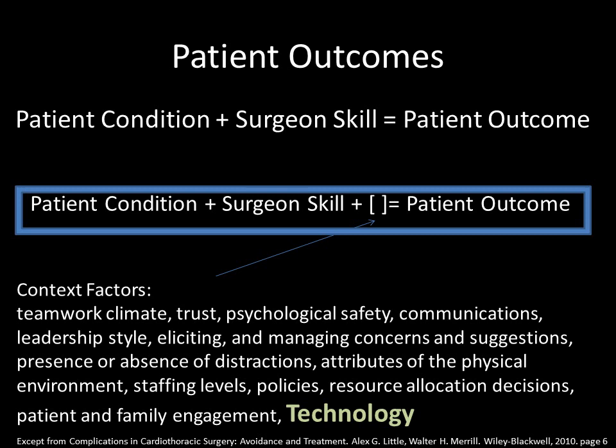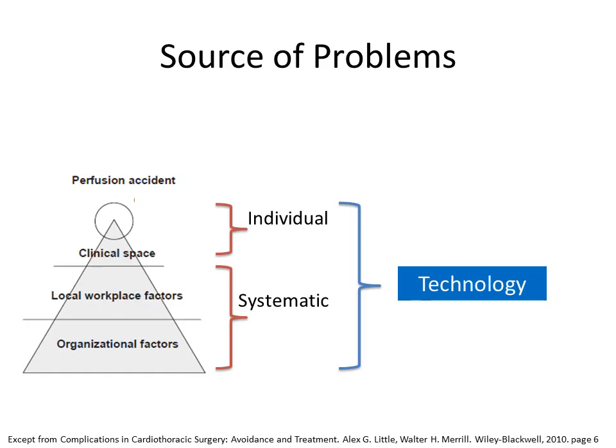Most importantly, as biomedical engineers, you should be excited about the last term: technology — because that is the space we are trying to work within. This is also the factor probably subject to the most evolution over time. These variables are not mutually exclusive either; you can develop a technology that trains surgeons, which would increase the surgeon's skill. One goal of device design is to create technology with consistent outputs regardless of user skill, always contributing positively to the equation. At every level of the pyramid, the problem could be caused by the interaction with technology, the lack of technology, or the use of inadequate technology.